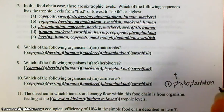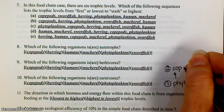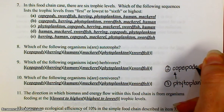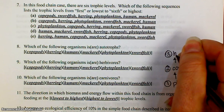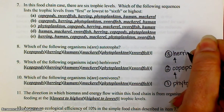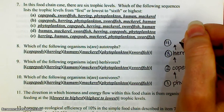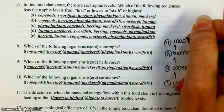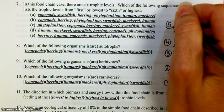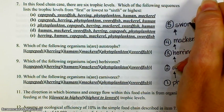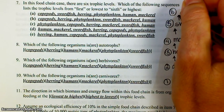Phytoplankton are eaten by copepods, which is going to be our next trophic level. Copepods are then eaten by herring. Herring is eaten by mackerel. Mackerel gets eaten by the swordfish. And the swordfish gets eaten by humans.